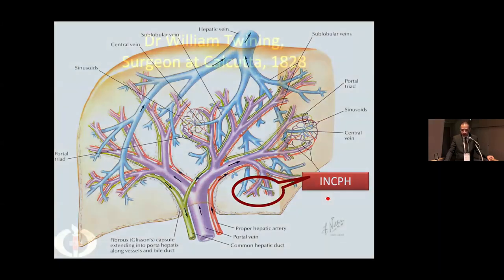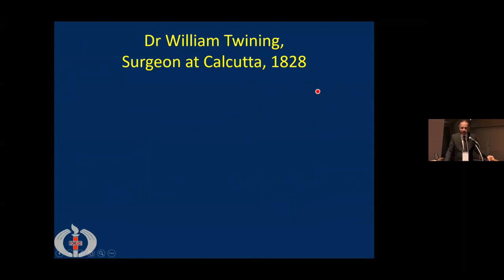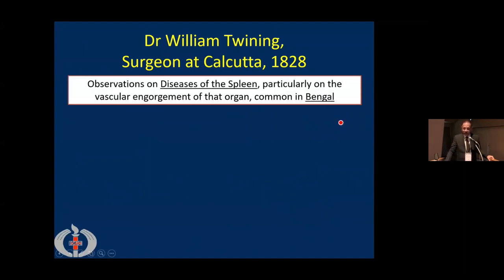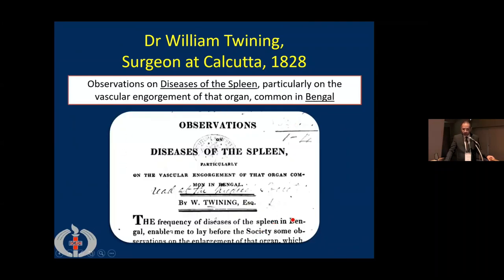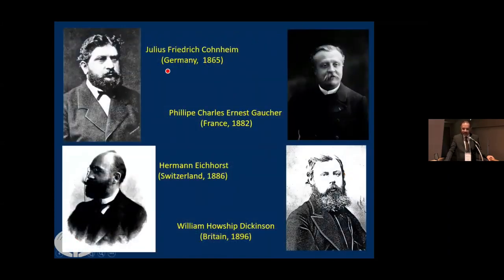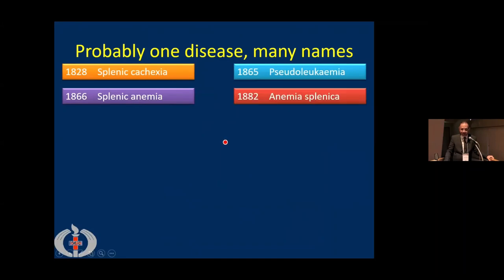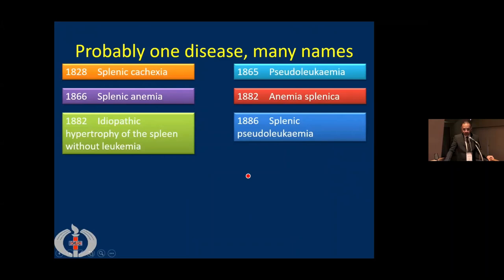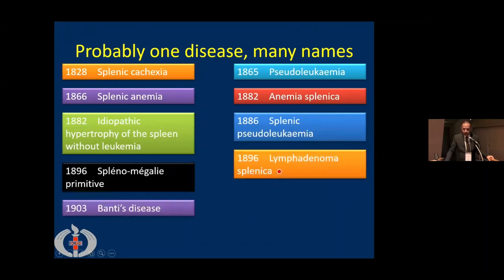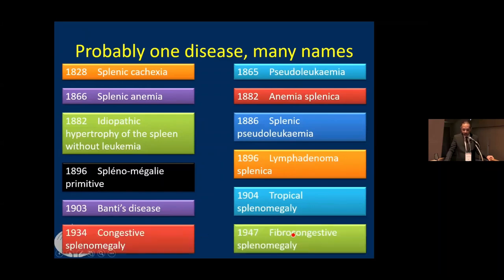Idiopathic non-cirrhotic portal hypertension was first discovered in Calcutta in 1828, when Dr. William Twinning observed vascular engorgement of the spleen in observations on diseases of the spleen, particularly in Bengal. It was known as splenic cachexia at that time. Workers from Germany, France, Switzerland, and Britain studied it, and it was probably one disease with many names: splenic cachexia, pseudo-leukemia, anemia splenica, idiopathic hypertrophy of the spleen, lymphoedema splenica, Banti's disease, tropical splenomegaly, and fibrocongestive splenomegaly.